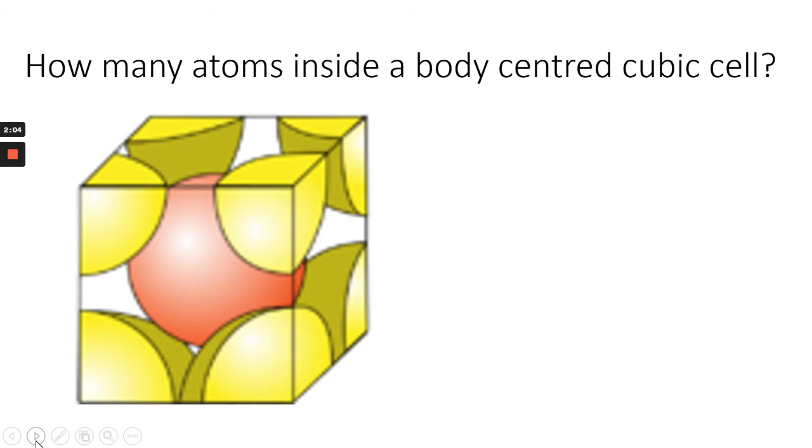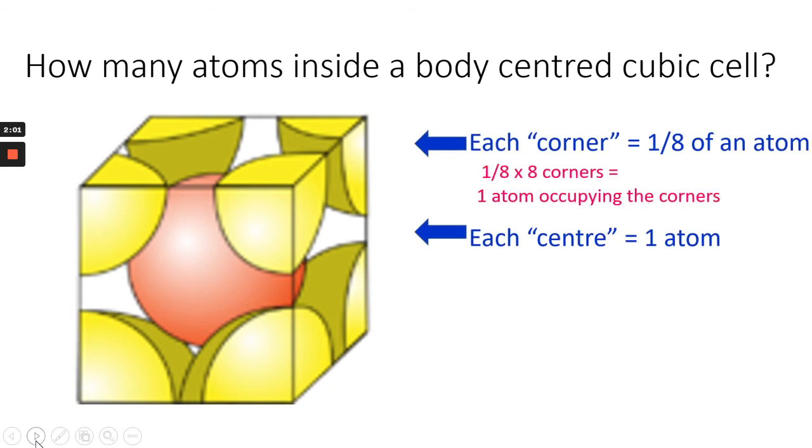Inside a body-centered cubic cell, you've got each corner, and again, one atom occupying the corners, but each center is one atom, so one plus one equals two, so there you have two atoms in the unit cell.